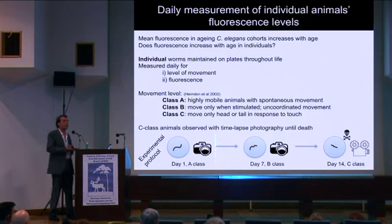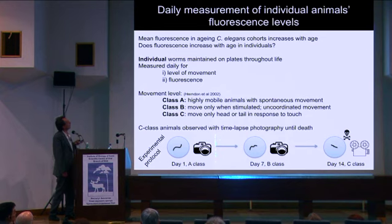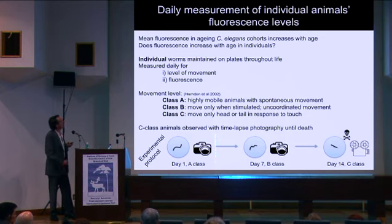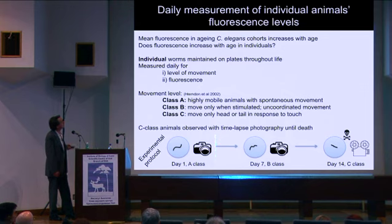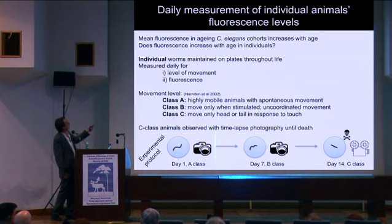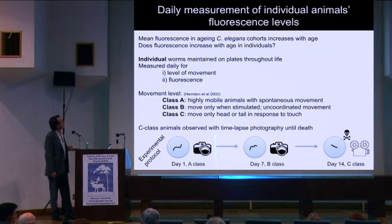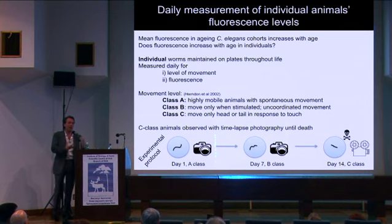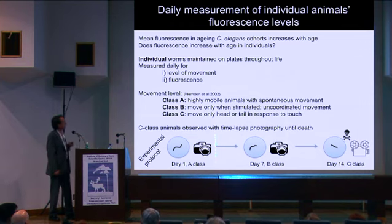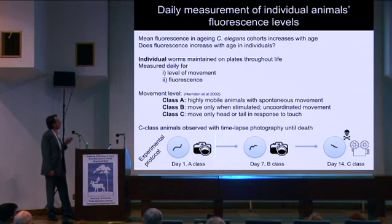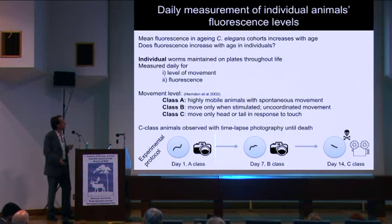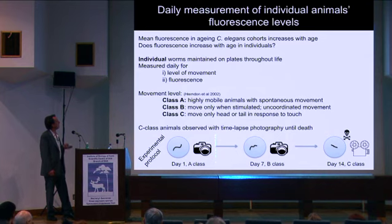That led us to get more suspicious. What we decided to do was to look more closely at the idea that the levels of blue fluorescence are going up with age. We did it slightly differently to previous studies in that we looked at individual animals rather than population cohorts, to avoid the confounding effects of population heterogeneity. In worms, you can classify the state of the worm in terms of how aged it is by its level of movement. These have been called class A, B, and C — interestingly, gerontologists have a similar classification for humans: go-goes, slow-goes, and no-goes.